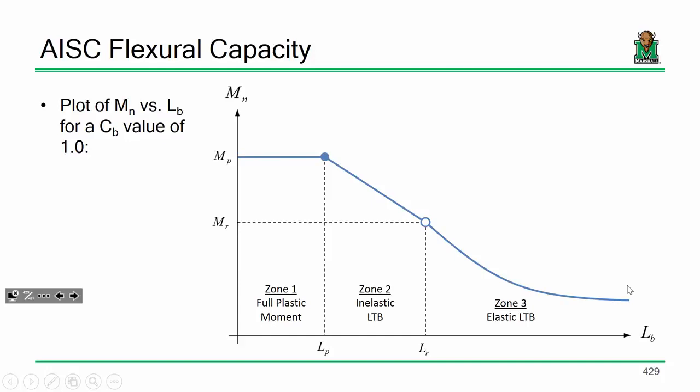Now, the capacity of a steel beam is broken up into three zones, if you will. The first zone over here on the left is the full plastic moment. And basically what this means is that if you have a beam that is really heavily braced, you know, we're talking about really, really short unbraced lengths, braces all over the place. What this is essentially saying is that if you have a beam that has a lot of bracing, then it's really not going to be allowed to buckle. And it's really going to just be able to reach M_P.